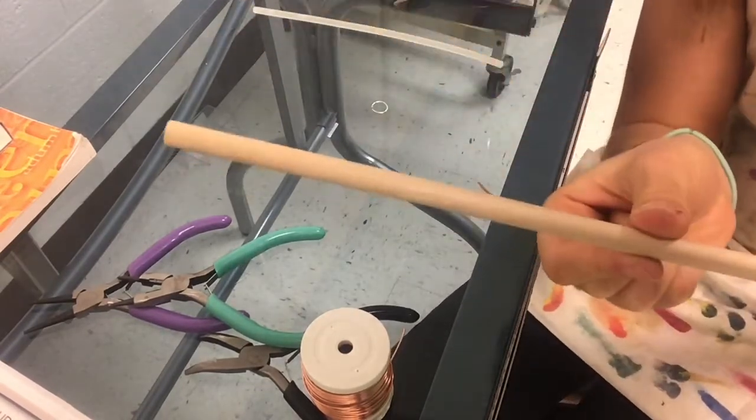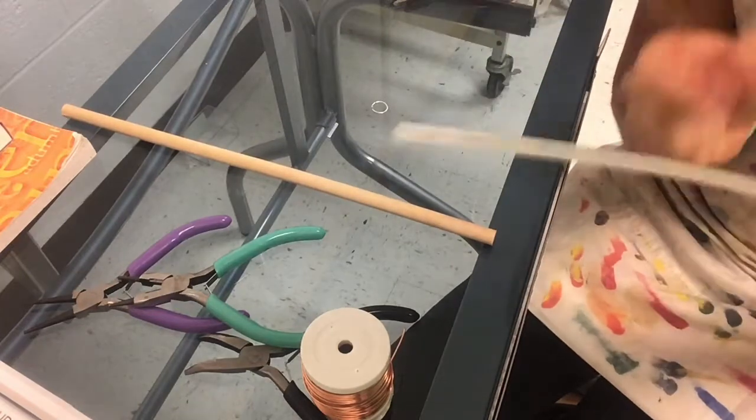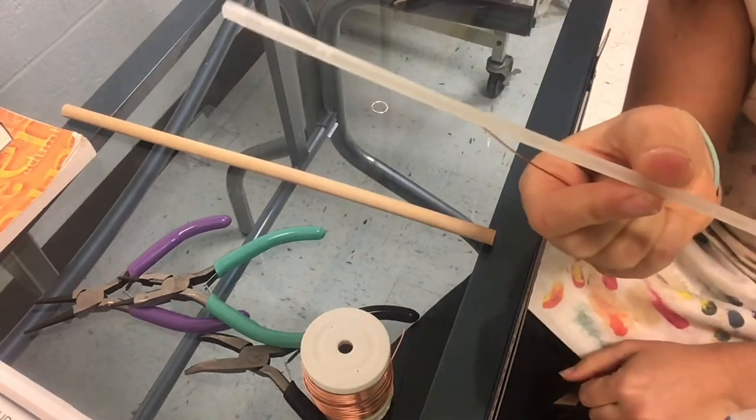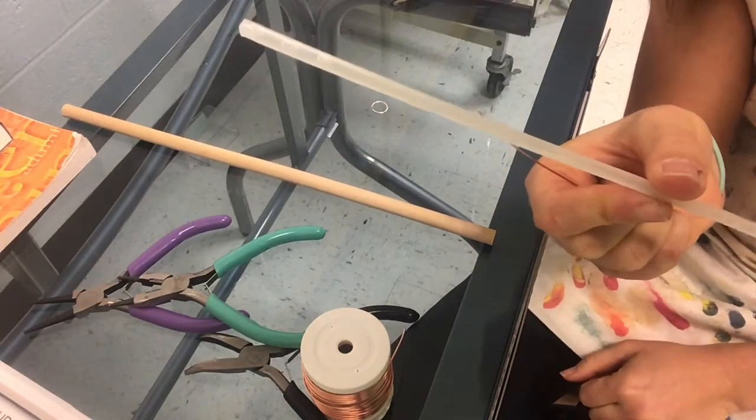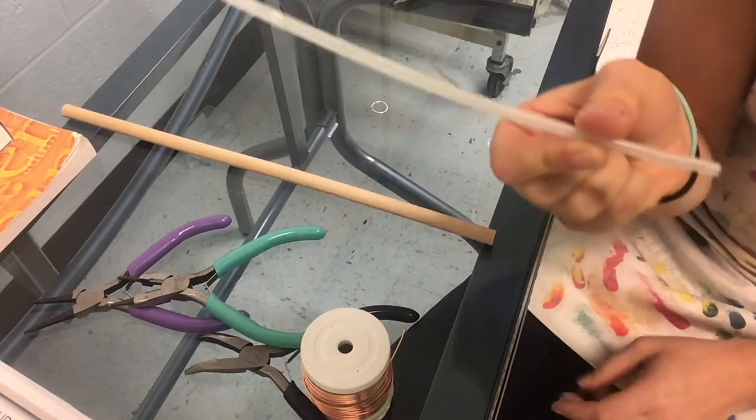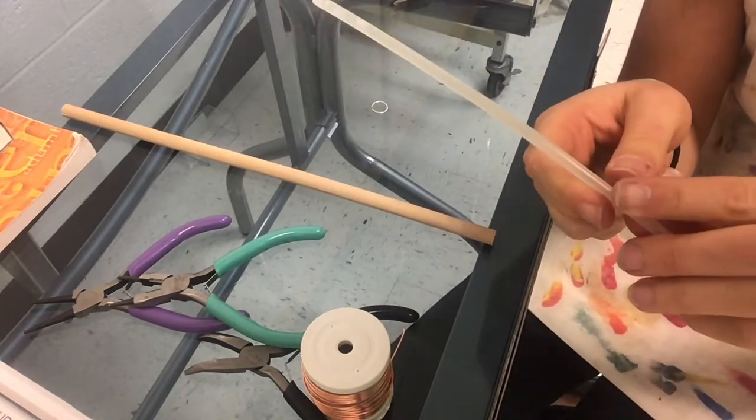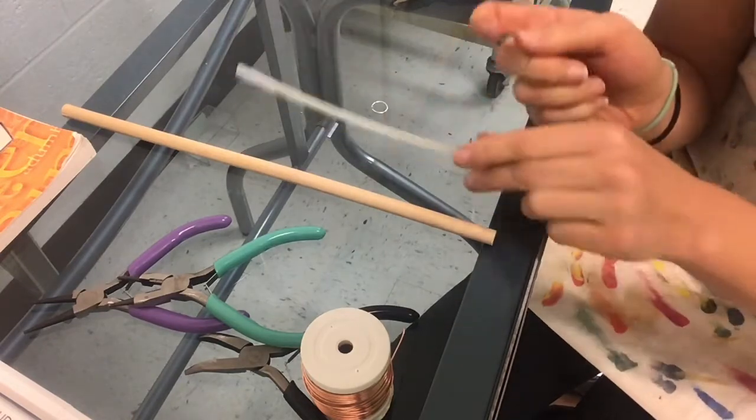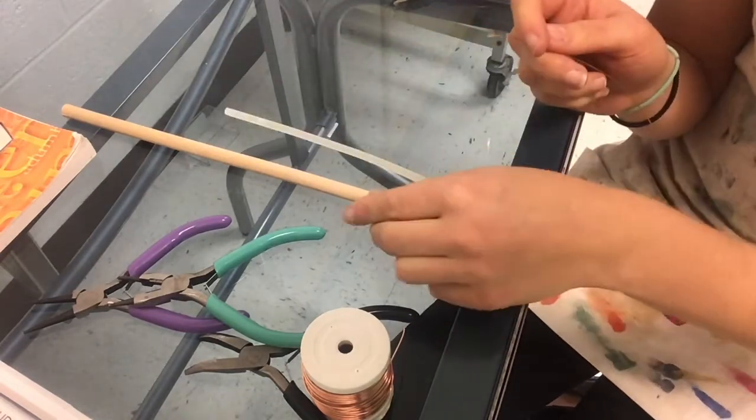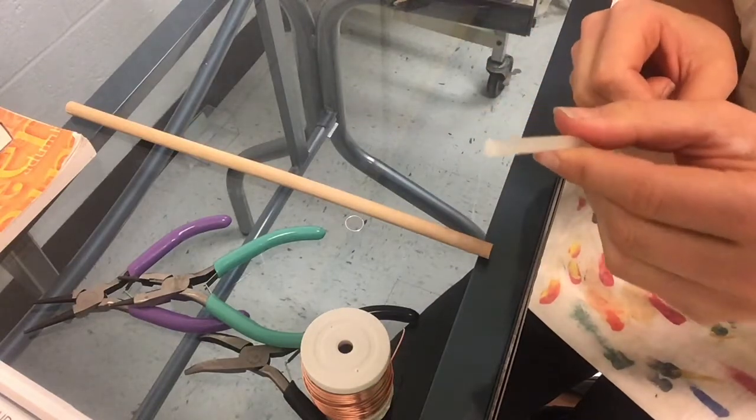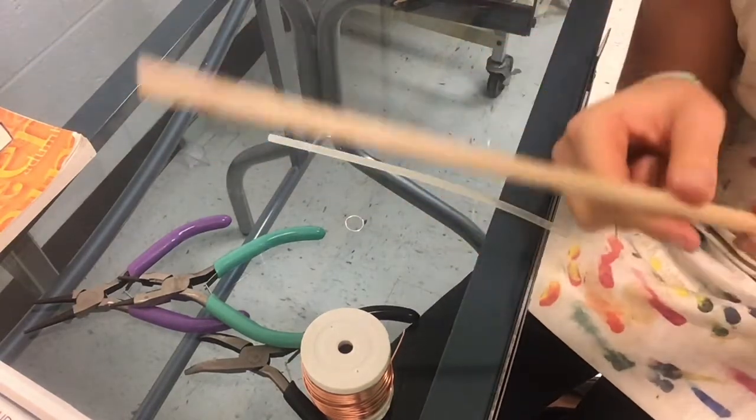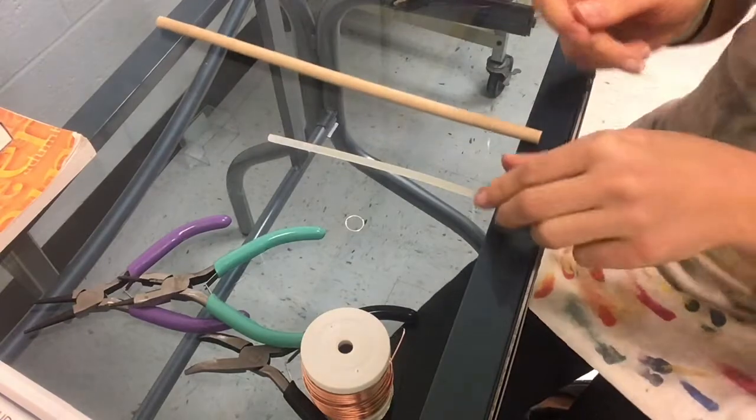In your basket, I'll have some dowel rods. I also have, I think this is like an old glow bracelet that my kids had for Halloween. Works fine too. The wrapping has to do with how big or small you want your jump rings to be. So a smaller circular form will make smaller jump rings, whereas something like this dowel rod will make much wider jump rings.